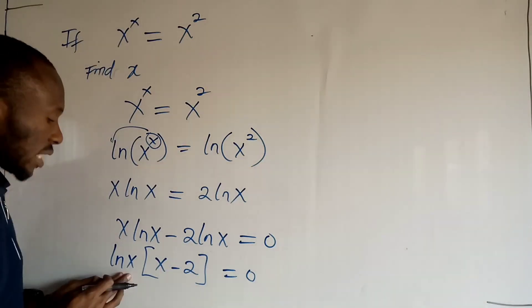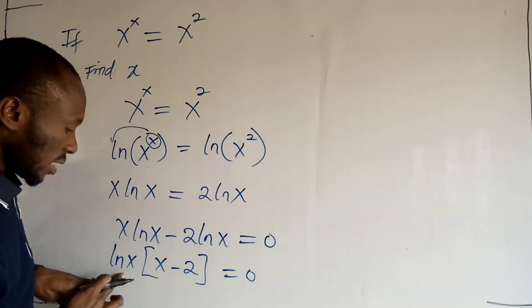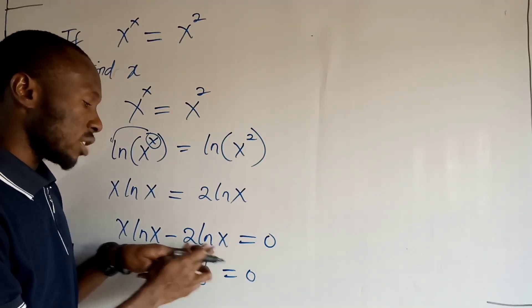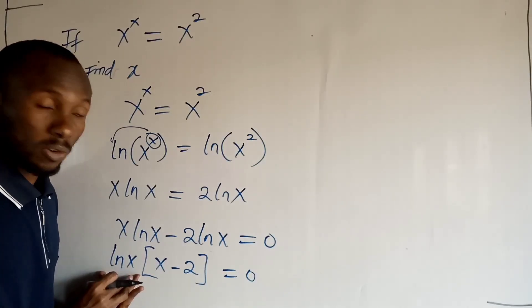Because as you can see, ln x times x is going to give me x ln x, and ln x times 2 is going to give me 2 ln x. So we just factor out ln x, alright?